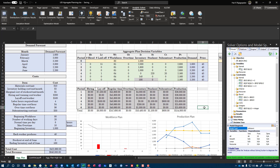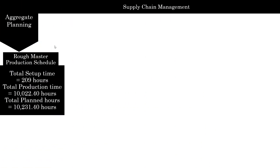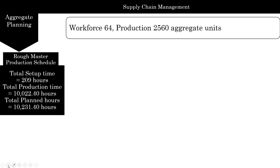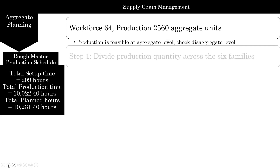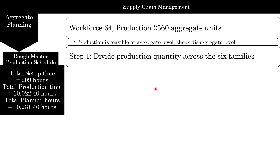With this, we finish the Excel part. Now we go back to aggregate plan to finish up the rest. Now that you have your aggregate plan, what are you going to do next? Well, now with your aggregate plan, you can create a master production schedule. Here is an example where we are going to create a rough master production schedule. Here we have our workforce, here's our production, and this is in aggregate units. Remember we had a number of product categories, so now we have to disaggregate — breaking it up into a number of pieces. The first step is to divide the production across the six families.